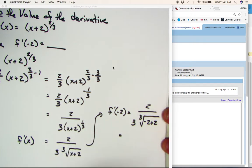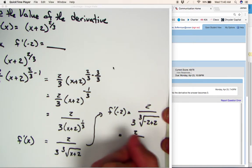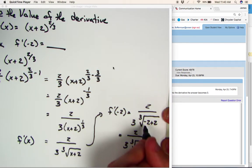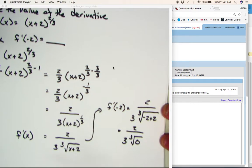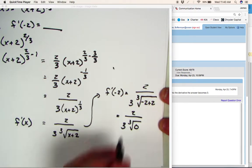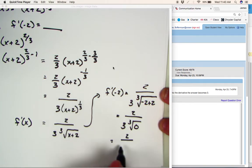So when we evaluate this, that would be 2 over 3 times the cube root of, well, negative 2 plus 2, well, that gets us a 0. Now, evaluate it even further, 2 over 3, and the cube root of 0 is 0, which means we have 2 over 0.